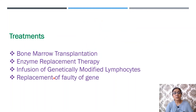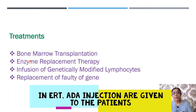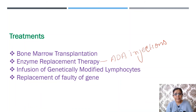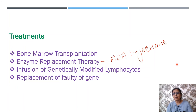There are a few methods of treatment. The first is bone marrow transplantation, and the second is enzyme replacement therapy, in which ADA injections are given to patients. The other two methods are a kind of gene therapy: infusion of genetically modified lymphocytes, and replacement of the faulty gene, which we will see in detail.